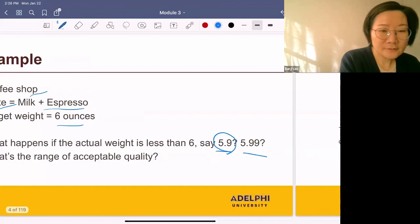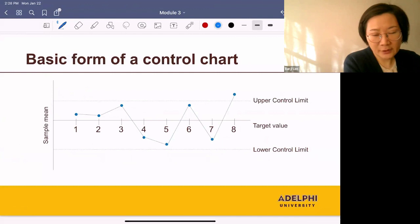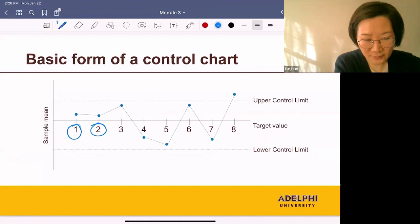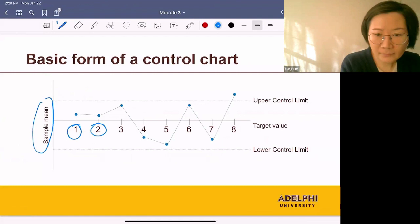The x-axis represents every hour—the first hour of operation, the second hour, and so on. The y-axis can be several things. In our example, the y-value is the sample mean. Here's how it works.